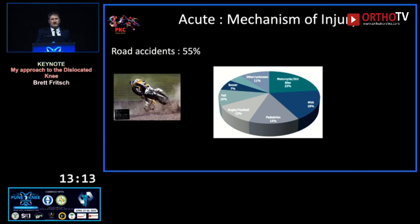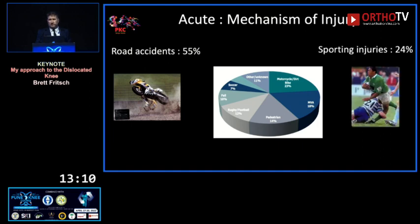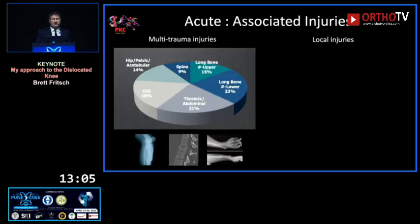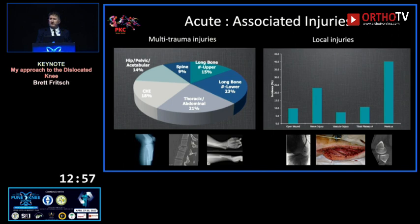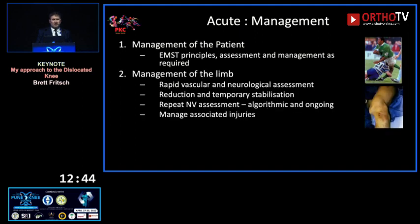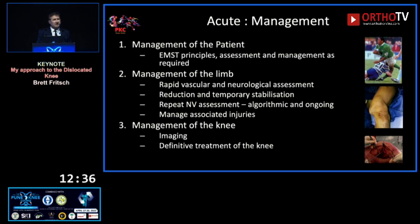The majority are high-energy injuries: just over half are road accidents, about a quarter sporting injuries, two-thirds are contact injuries. There's a lot of multi-trauma — thoracic, abdominal, long bone, spine, and head injuries. Local injuries to soft tissue, nerve, vascular structures, tibial plateau fractures, and meniscus are all common. You start with EMST principles: assessment and management as required, a rapid vascular-neurological assessment, reduce and stabilize the knee, then repeat those assessments.